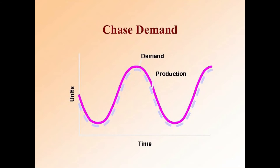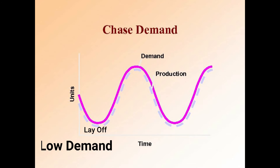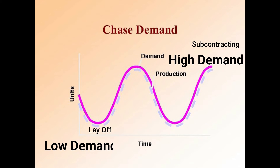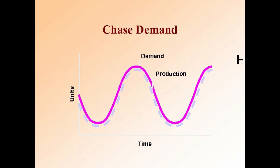The first is the chase strategy, using capacity as a lever. It tries to match the production plan to the demand pattern and absorbs variation in demand by hiring and firing workers. During low demand, production is cut back and workers are laid off. In case of high demand, subcontracting can be done to meet the demand.